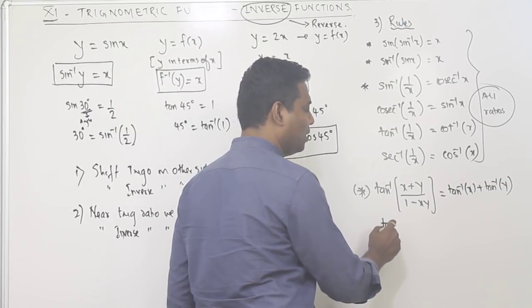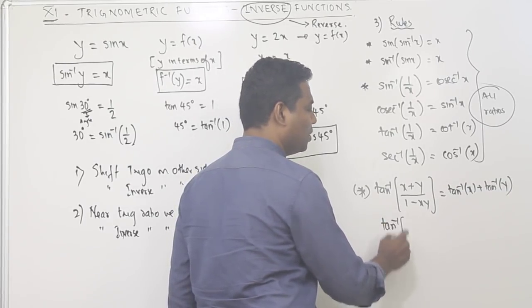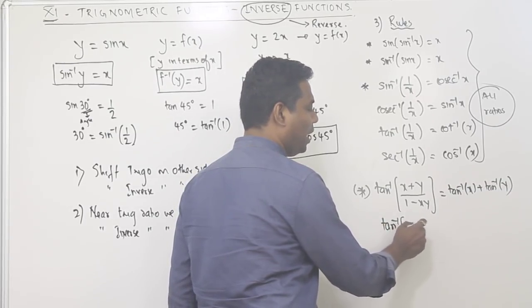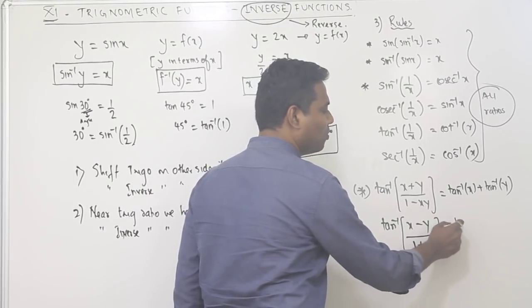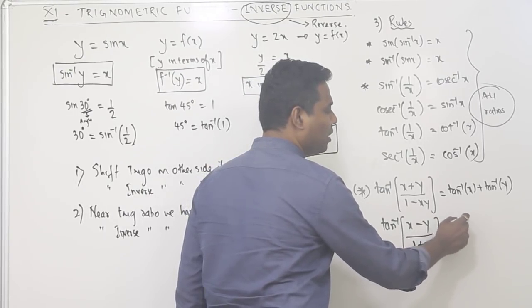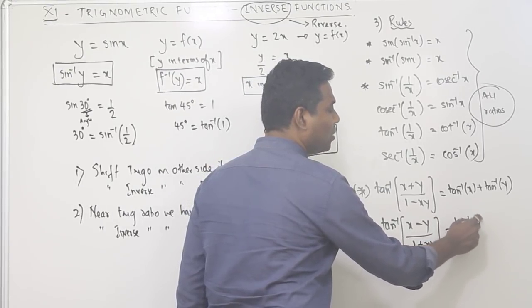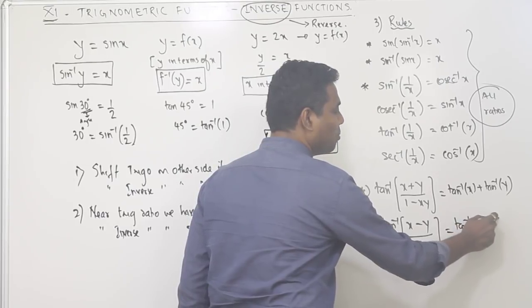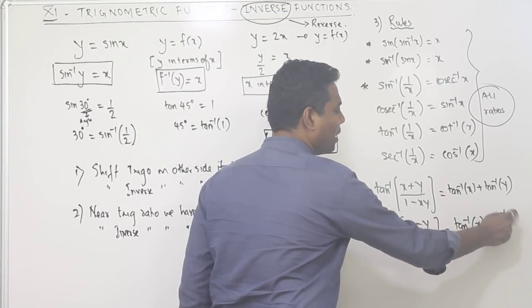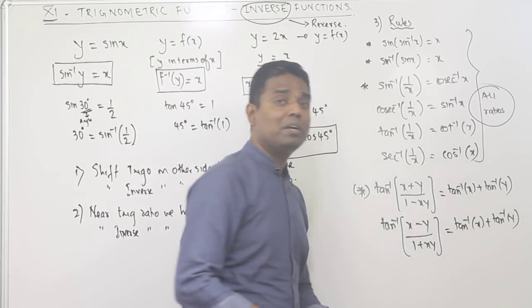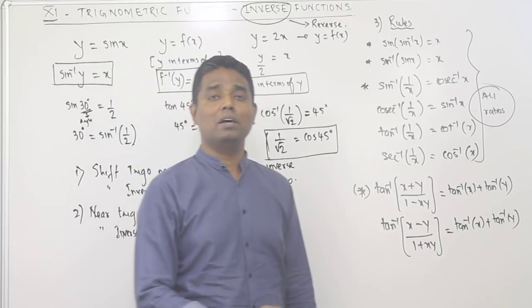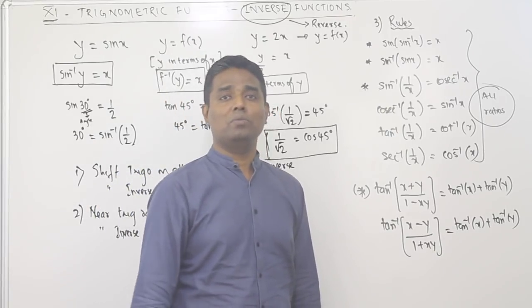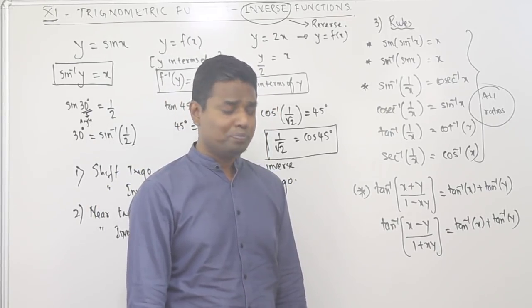Using the same idea with the subtraction formula: tan inverse of (x minus y) upon (1 plus xy) gives tan inverse x minus tan inverse y.